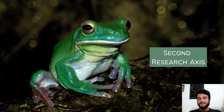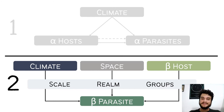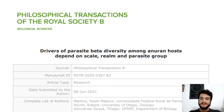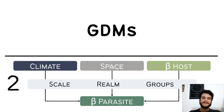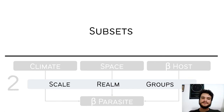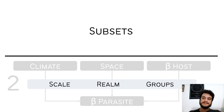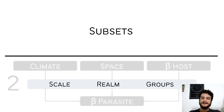In relation to our second research axis, focused on parasite beta diversity, it is accepted in a special edition of Philosophical Transactions on Disease Macroecology, so soon you can check it out as well. For these chapters, we used GDMs to test how the relative effects of climate, space, and host beta diversity vary in relation to scale, realm, and groups. To test for scale, realm, and group effects, we fitted different GDM models to different subsets of our data, and we also ran cross-validation procedures.